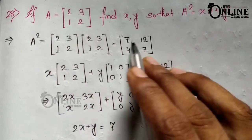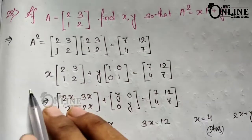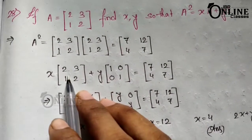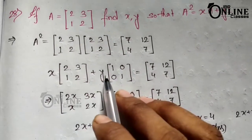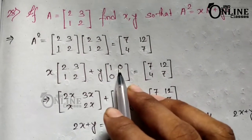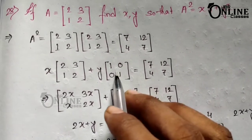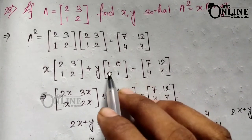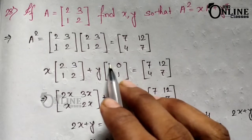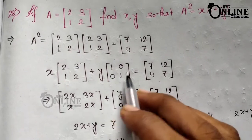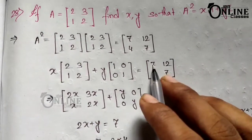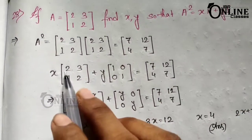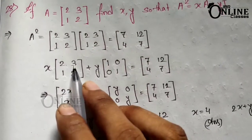We get A² equals [7, 12; 4, 7]. Now, x times A means x multiplied by the matrix A, plus y times I, where the identity matrix I is [1, 0; 0, 1] — the diagonal elements are always 1. That equals [7, 12; 4, 7].